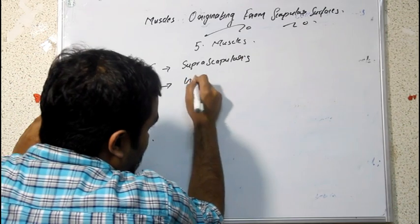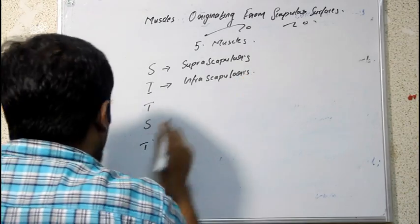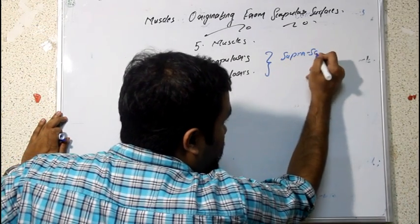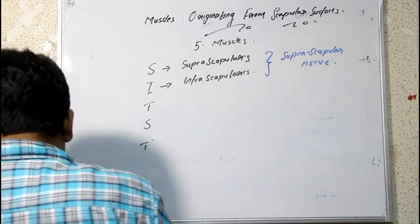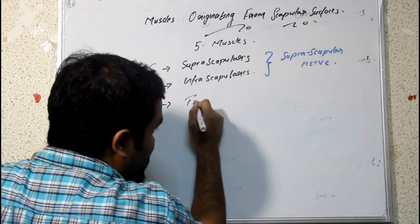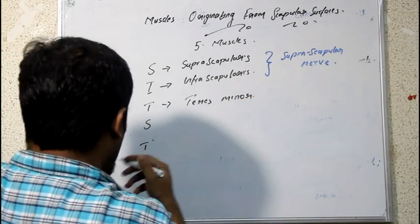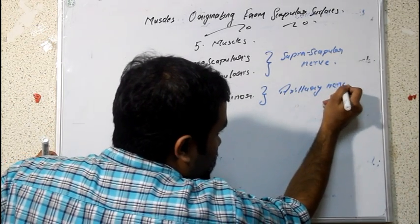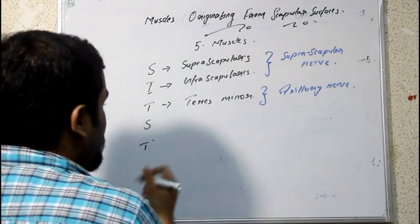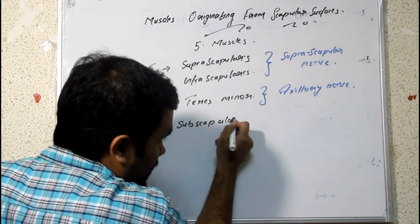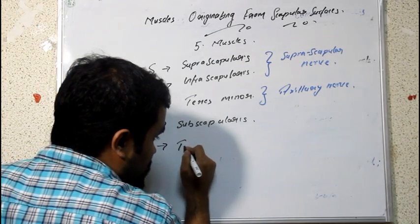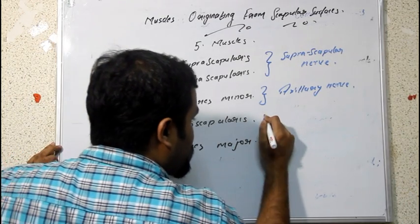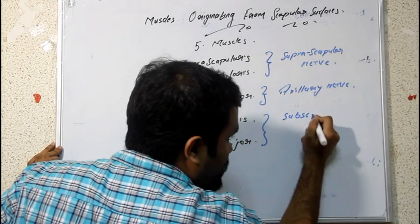Then we have infrascapularis. Both suprascapularis and infrascapularis are supplied by the suprascapular nerve. The third muscle is teres minor, which is supplied by the axillary nerve. Then we have subscapularis, and the fifth muscle is teres major.